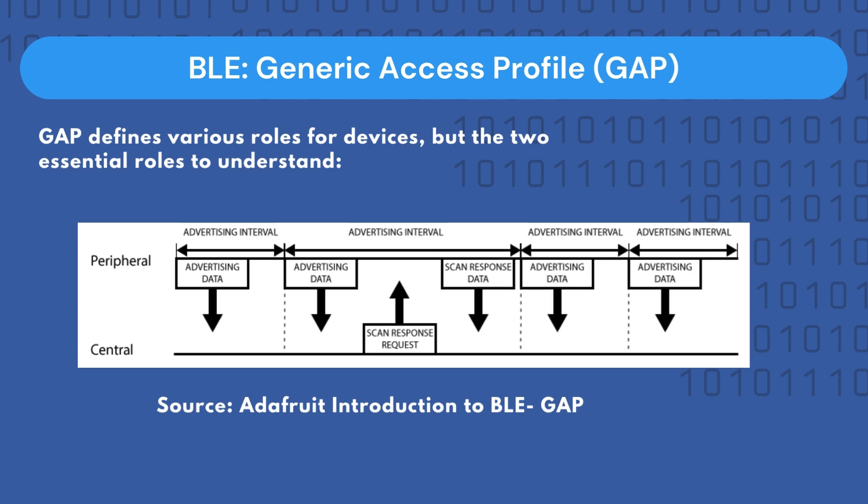The scan response payload is a payload that central devices can use to request information about the availability of peripheral devices. The peripheral sets a specific advertising interval, and every time this interval passes it transmits its main advertising packet to let neighboring devices know a peripheral is available. If a listening device is interested in the scan response payload, it can request that payload and the peripheral will respond with additional data. Once a connection has been established between a peripheral and a central device, the advertising process stops, and the GATT services and characteristics are used to communicate in both directions.